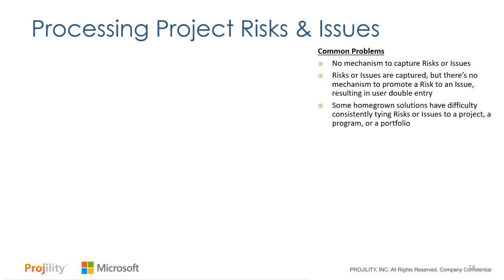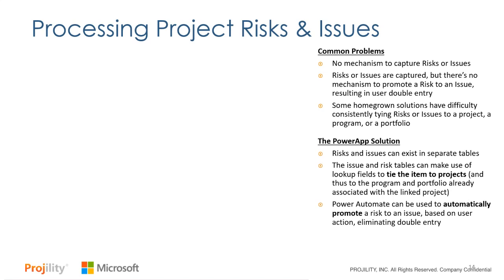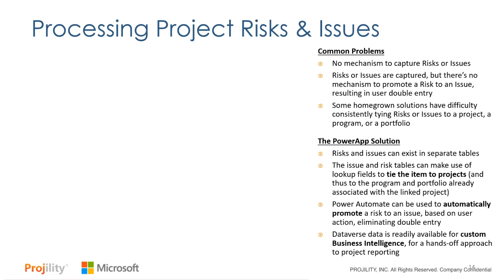When looking at the Power Apps solution for risk and issue management, risks and issues would be separate tables in the Dataverse database. The risk and issue tables can tie through lookup fields to projects — not only to projects but to programs, portfolios, or any other elements you may have, such as applications. So you can show risks related to the ongoing management of a specific application — it's a unique set of entities related through table structure. You can then use Power Automate to automatically promote a risk to an issue when it occurs based on a specific user action, eliminating double entry and saving people time. And just like the business case, the Dataverse data is readily available for reporting through Power BI.